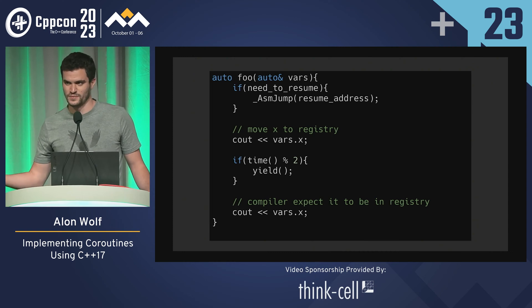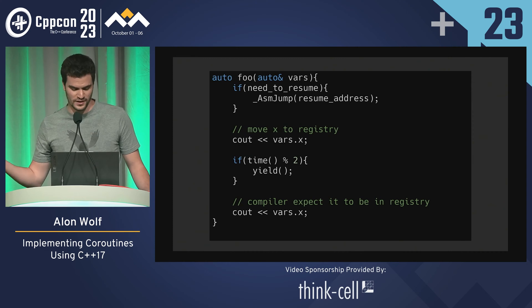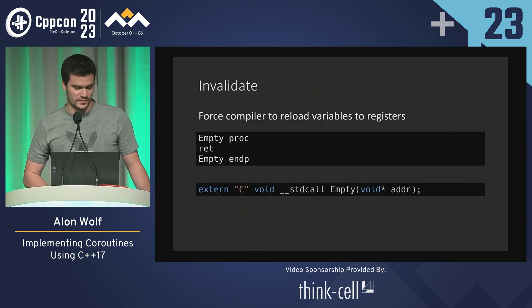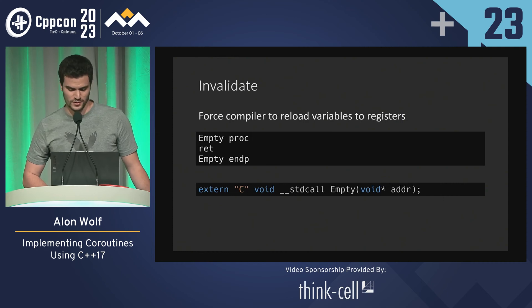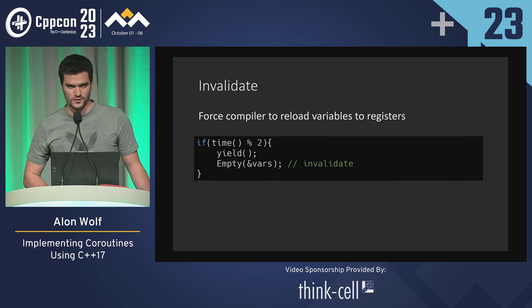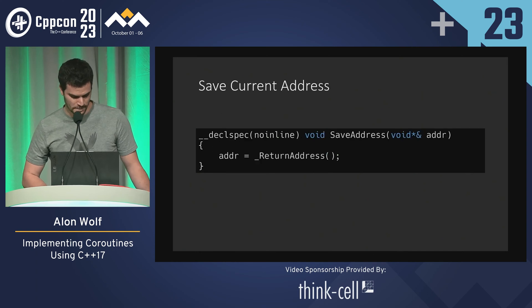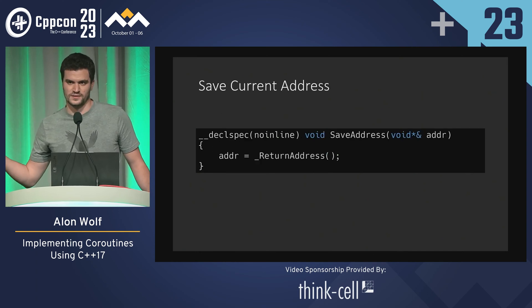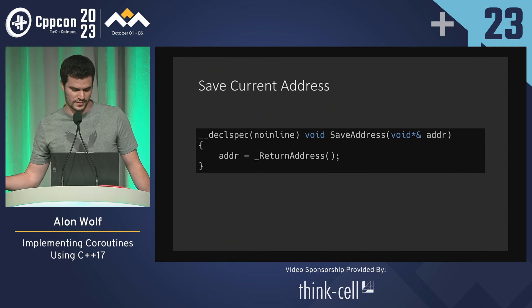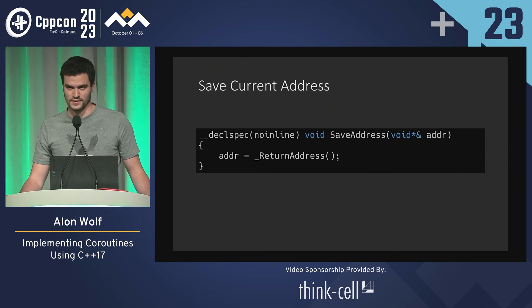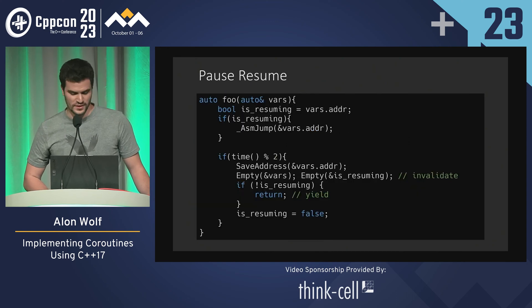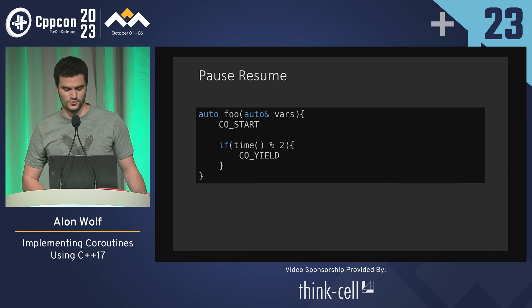But the problem is that after resume, the compiler might assume that some variables might be in registers. So I wrote an empty assembly procedure just to force the compiler to reload the variables to registers, and I call it every time after a yield. To get the return address of where we stopped, I created functions that call the built-in return address and I forced them to be no-inline. And now we have pause and resume and we can refactor them into macros.